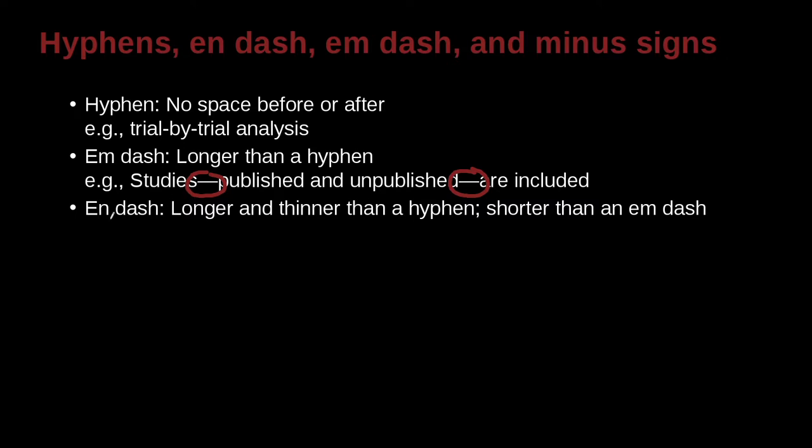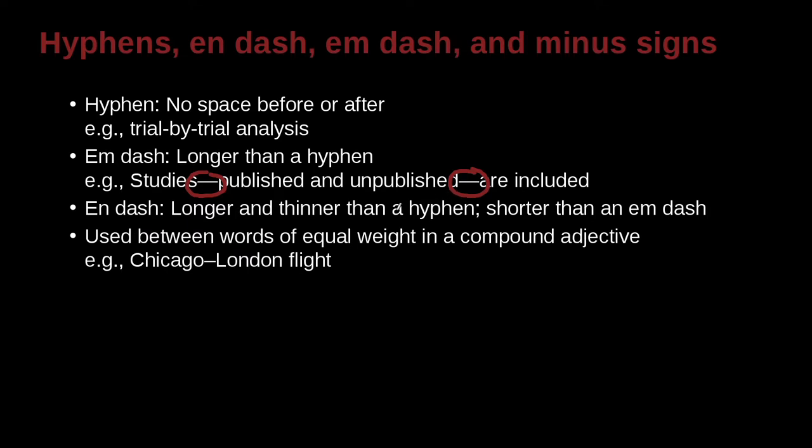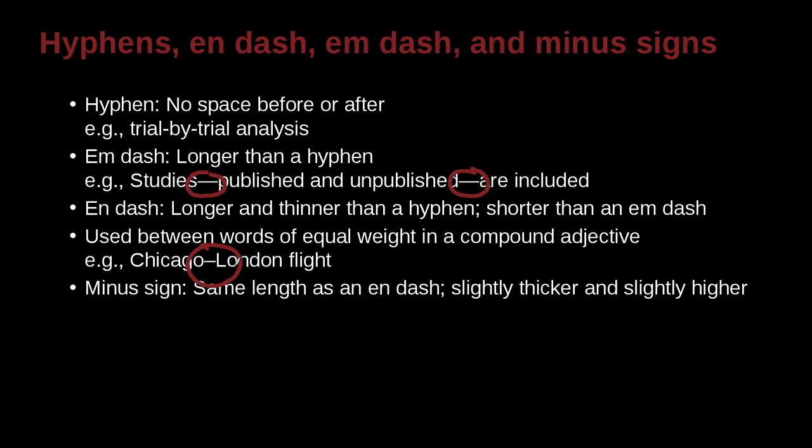An em dash, please pay attention here—em and en. An en dash is longer and thinner than the hyphen and shorter than an em dash. It's getting confusing, isn't it? Here's an example. Use between words of equal weight in a compound adjective such as this: Chicago–London flight, meaning Chicago to London flight. And then we also have a minus sign. A minus sign is the same length as an en dash, but it's a little bit thicker and slightly higher.